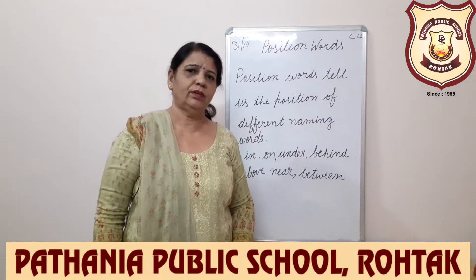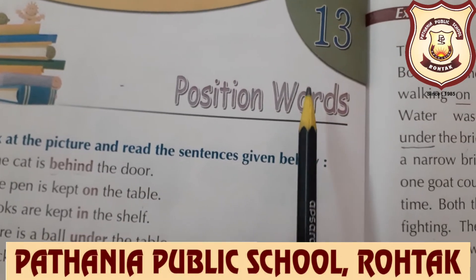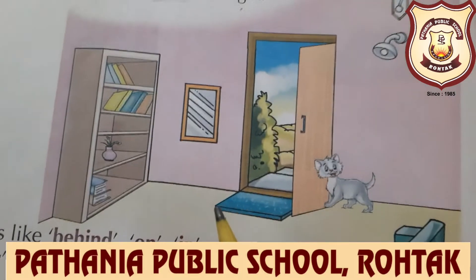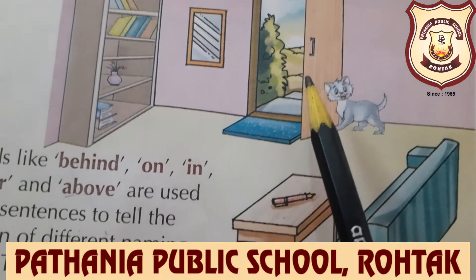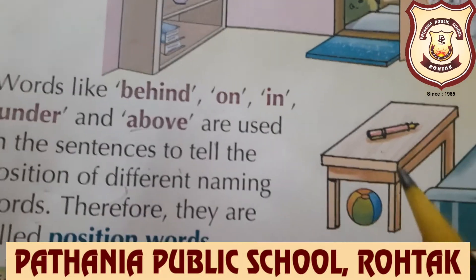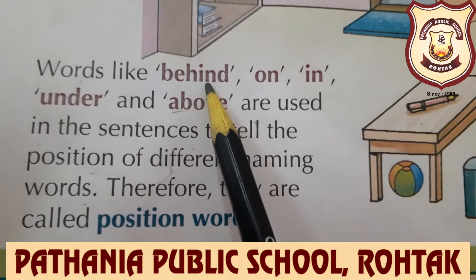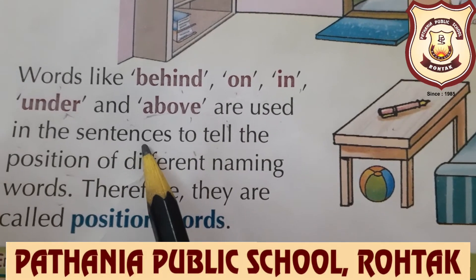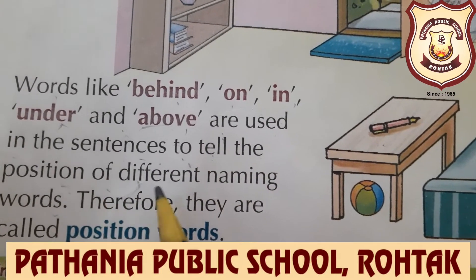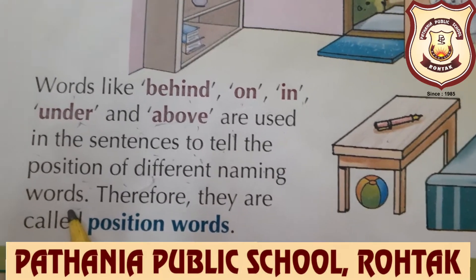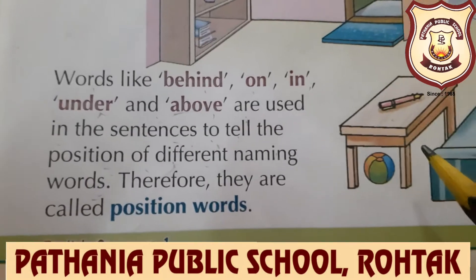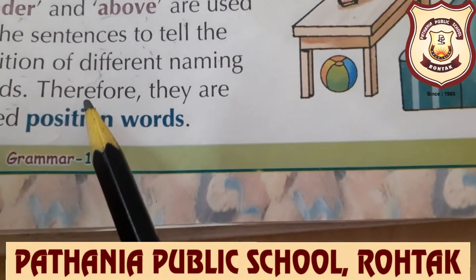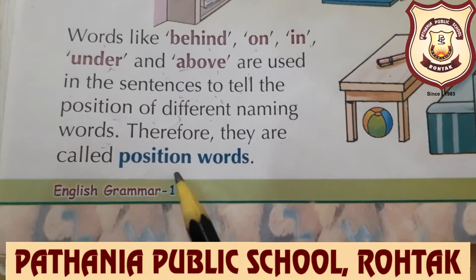Now, we will do this in our book. This is chapter number 13. Chapter name is Position Words. I told you what are position words, and now we will read what is written here in the book: 'Words like behind, on, in, under and above are used in sentences to tell the position of different naming words.' These words tell the position of different naming words — that is why they are called Position Words.